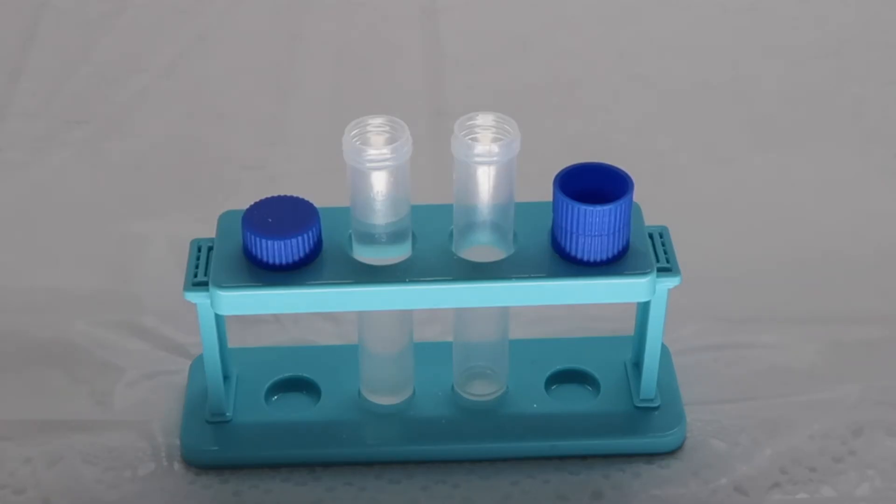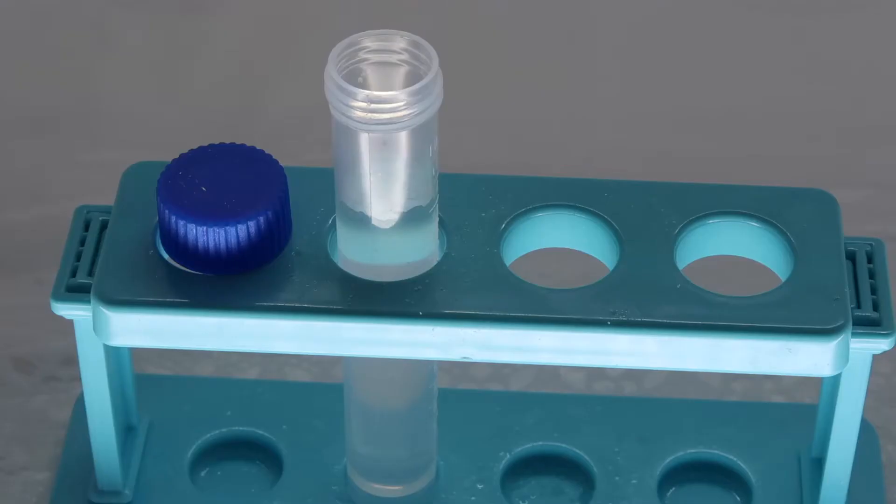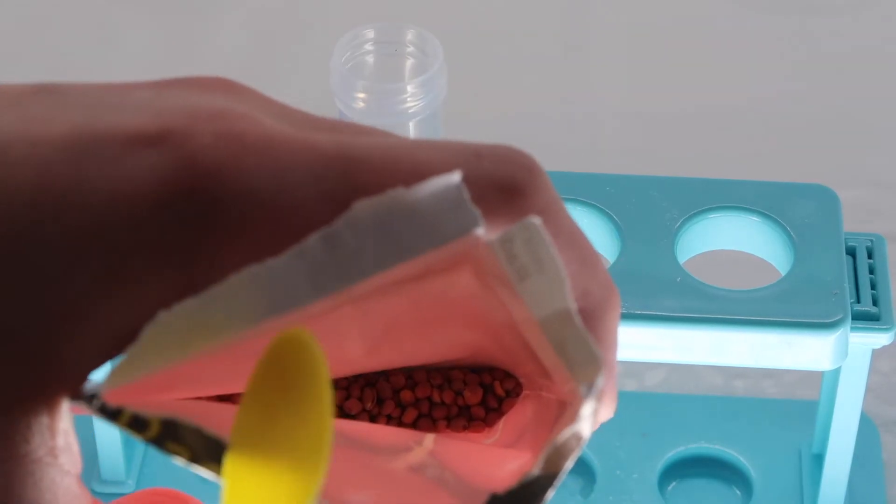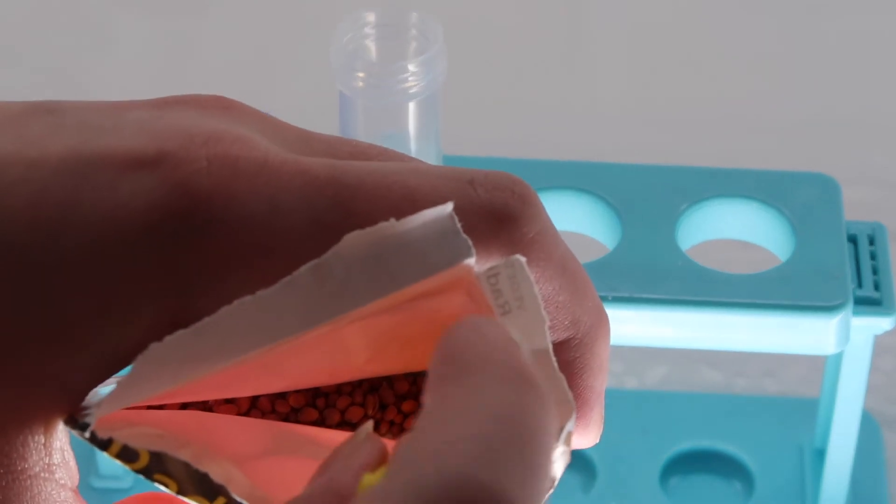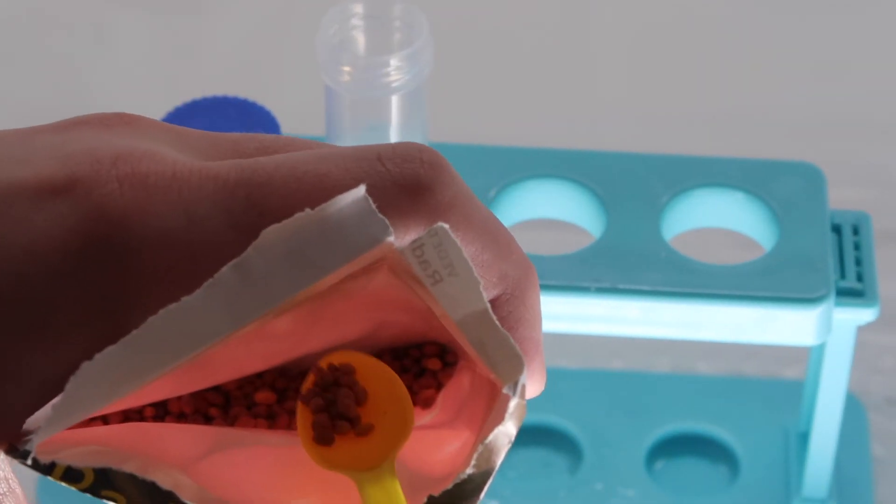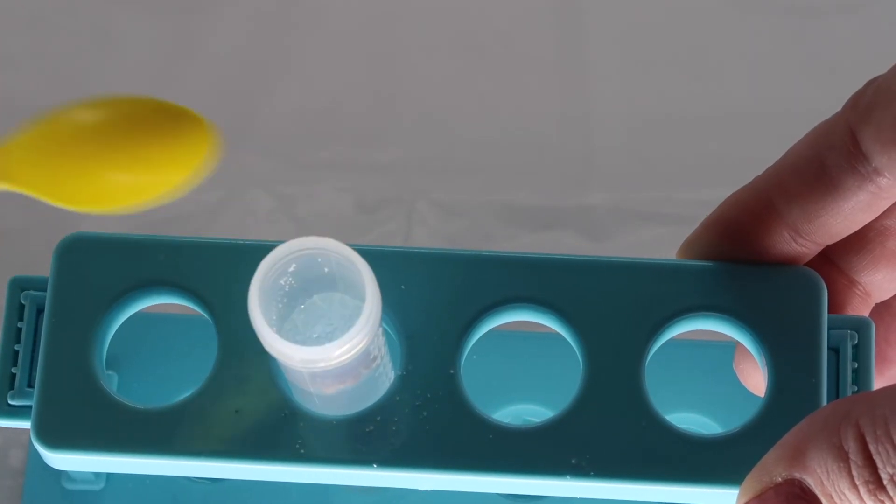When the polymer expands to fill the tube, it is ready to go. Put your seeds into the polymer. Make sure to add water to it regularly to keep it moist.